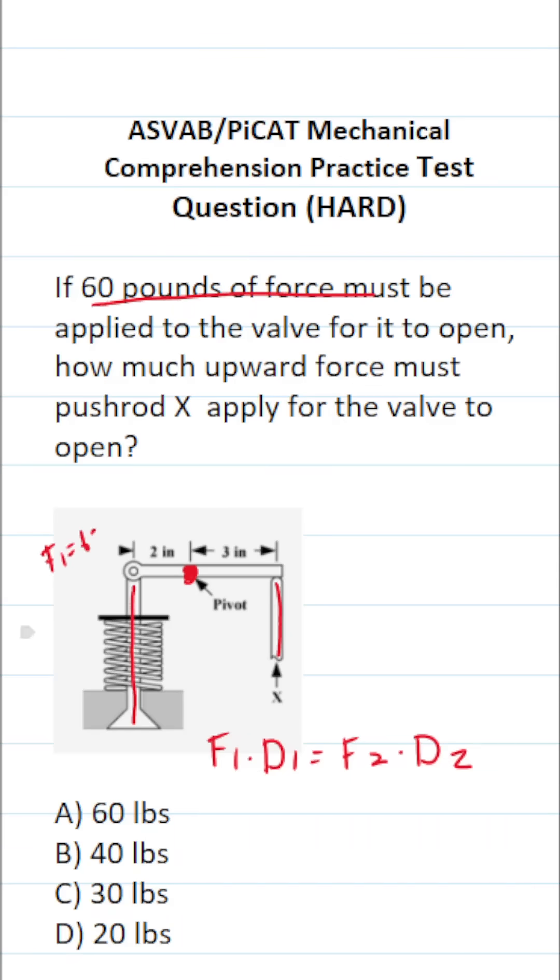So F1 is going to be 60 pounds of force times D1. What is D1? It's the distance that this force we're applying is from the pivot point or fulcrum. We can see that it is 2 inches away from that pivot point, so D1 is going to be 2.